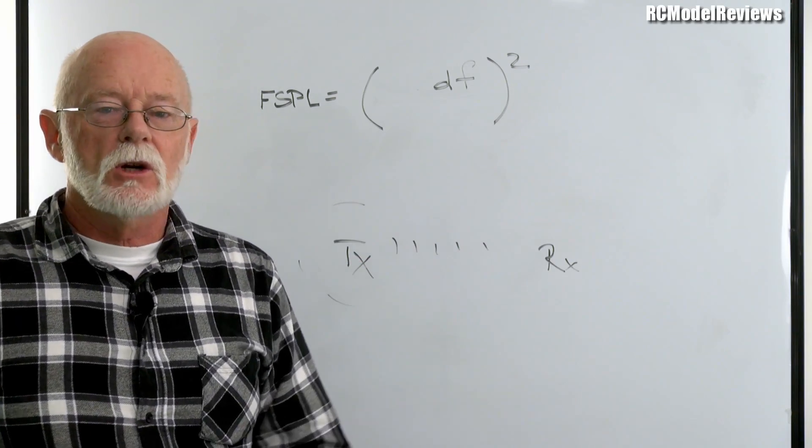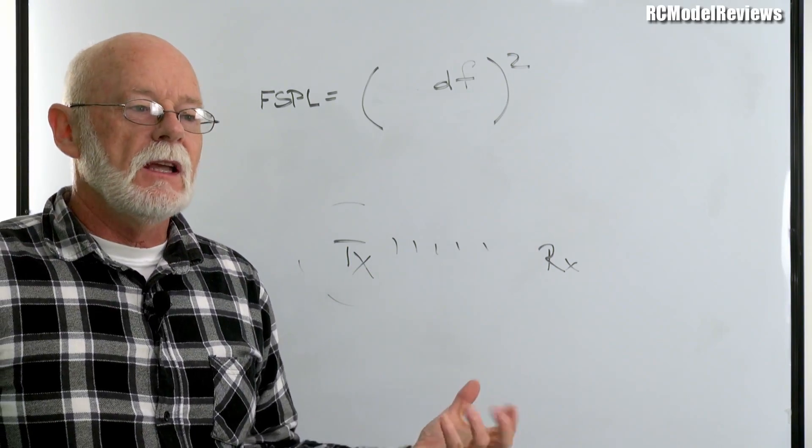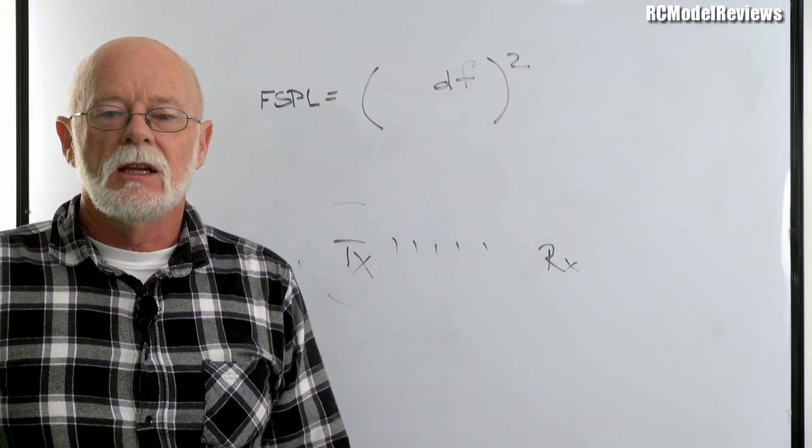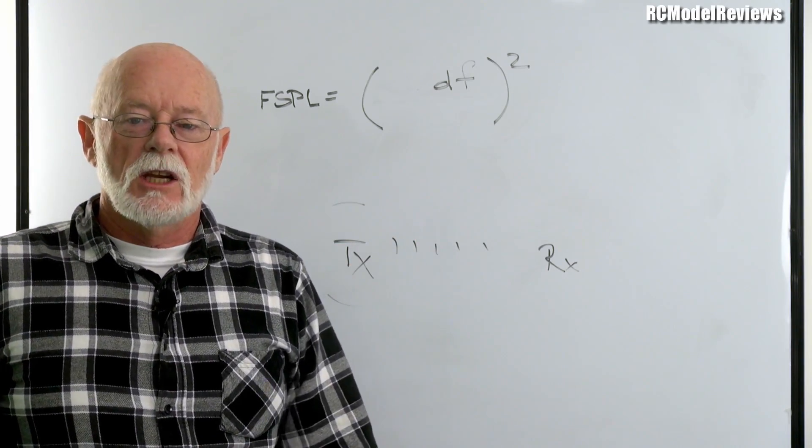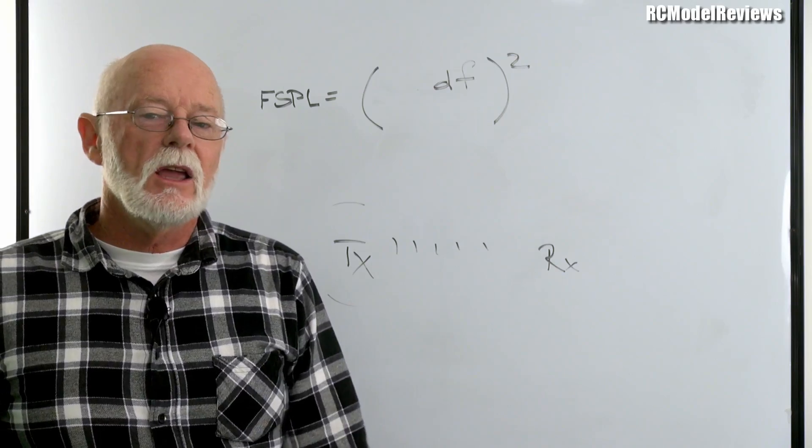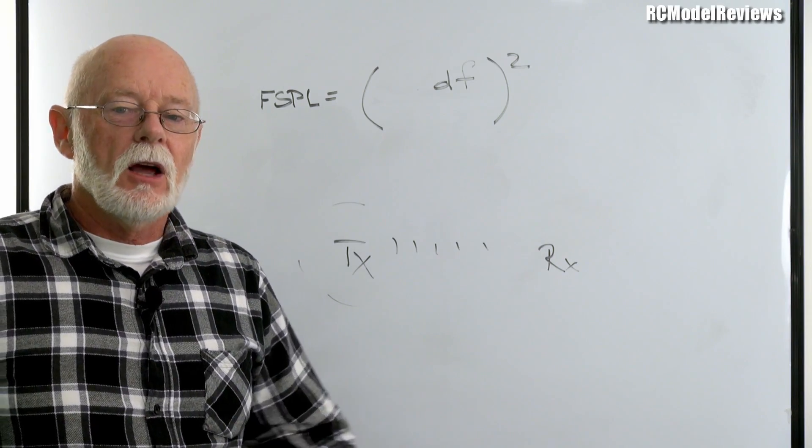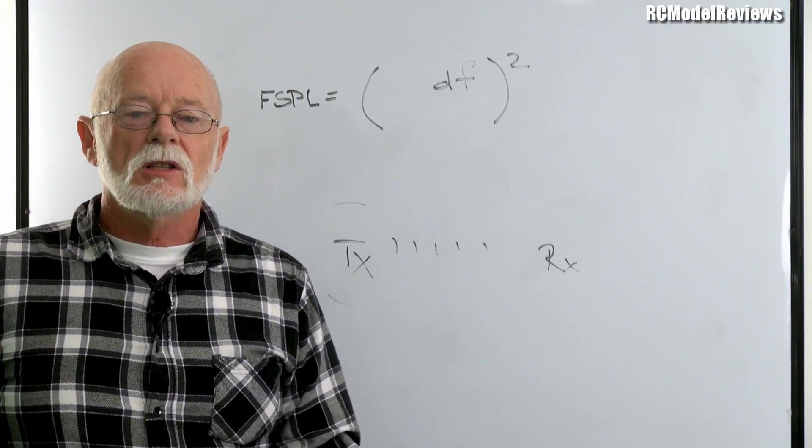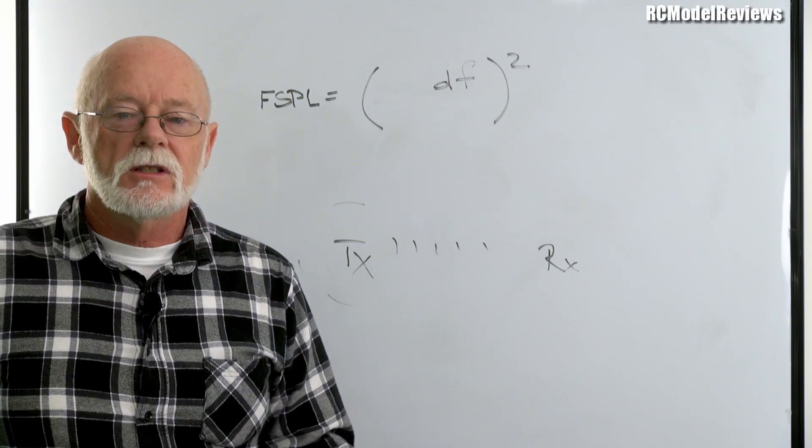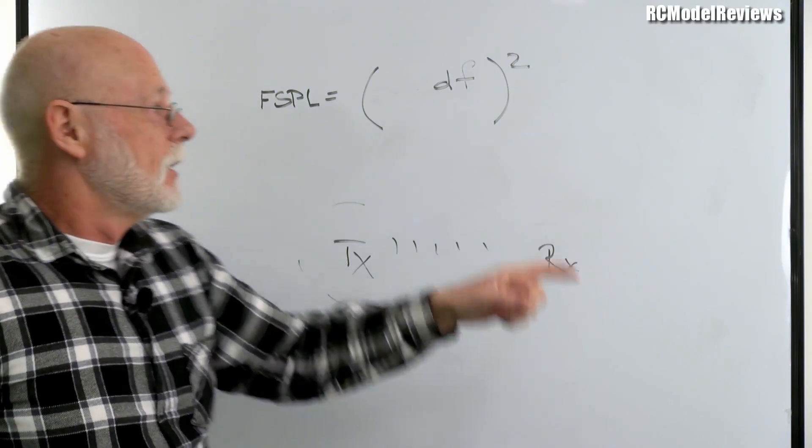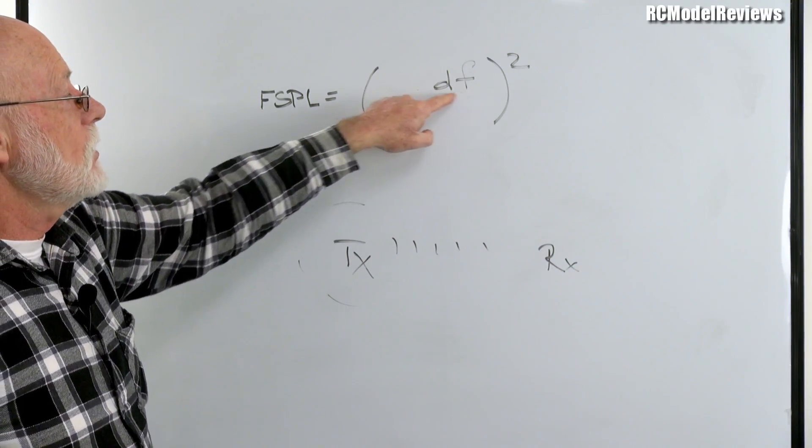So frequency affects range—isn't that great? Now you can perhaps see why when we have long range equipment, long range radio gear, long range FPV, it tends to be at a lower frequency than short range stuff. If you're going to do really long range FPV, you're probably going to use 1.2 gigahertz for your video frequency. And likewise you're probably going to use 900 megahertz like Crossfire or the FrSky system, or even 433 for your radio link.